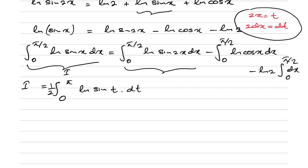For the second integral — the integral of ln(cos x) — I will take another substitution: x = π/2 minus u, so dx = minus du.